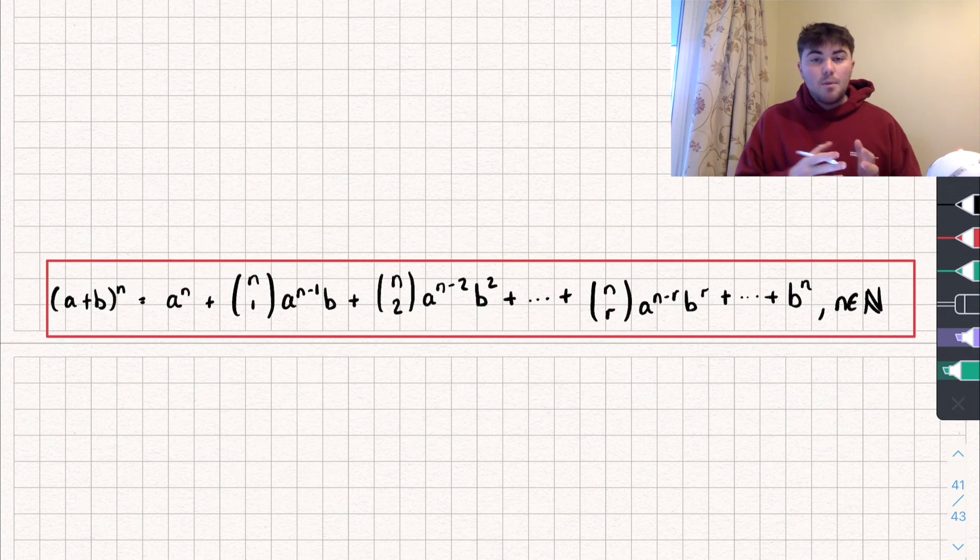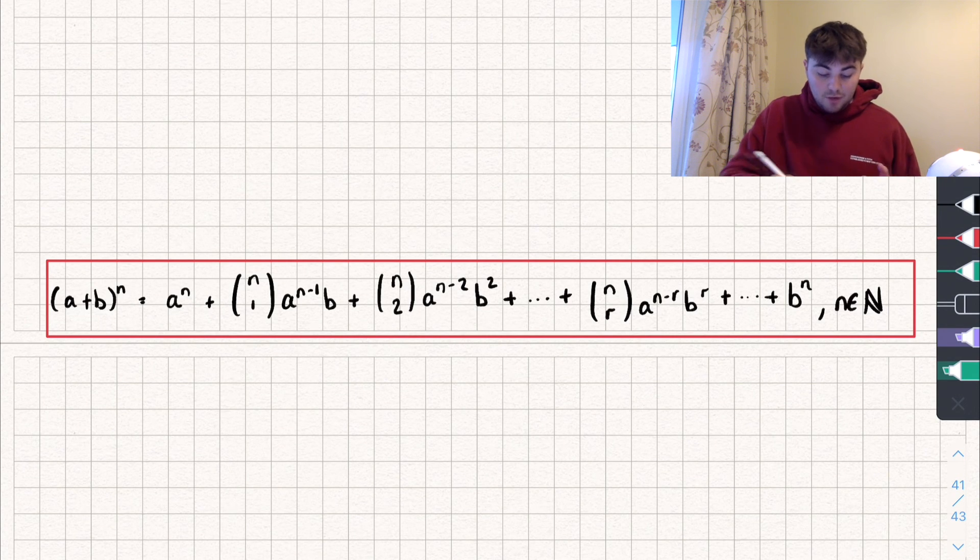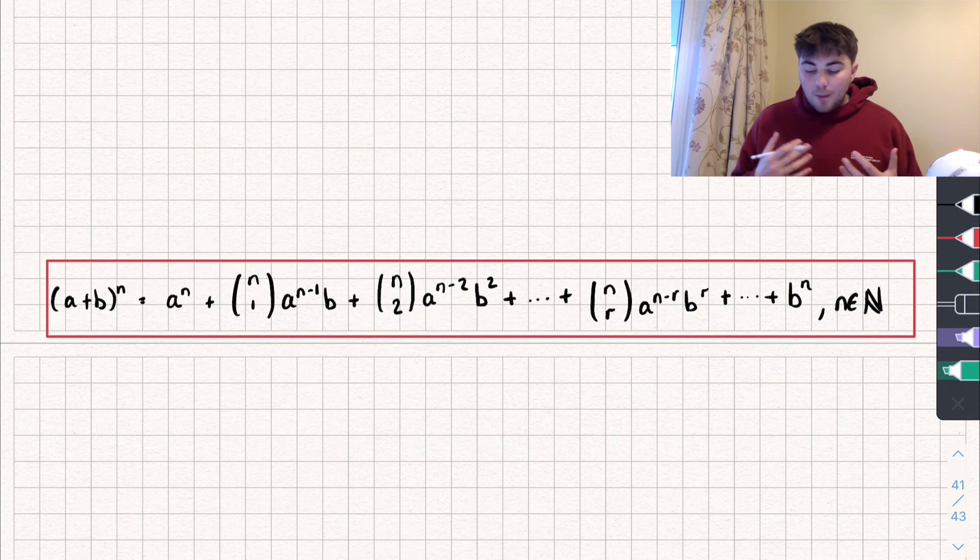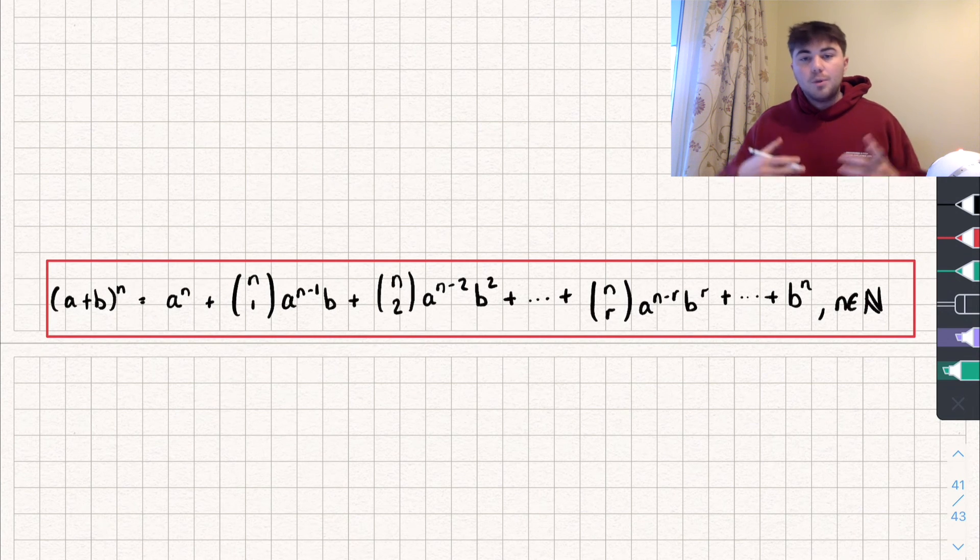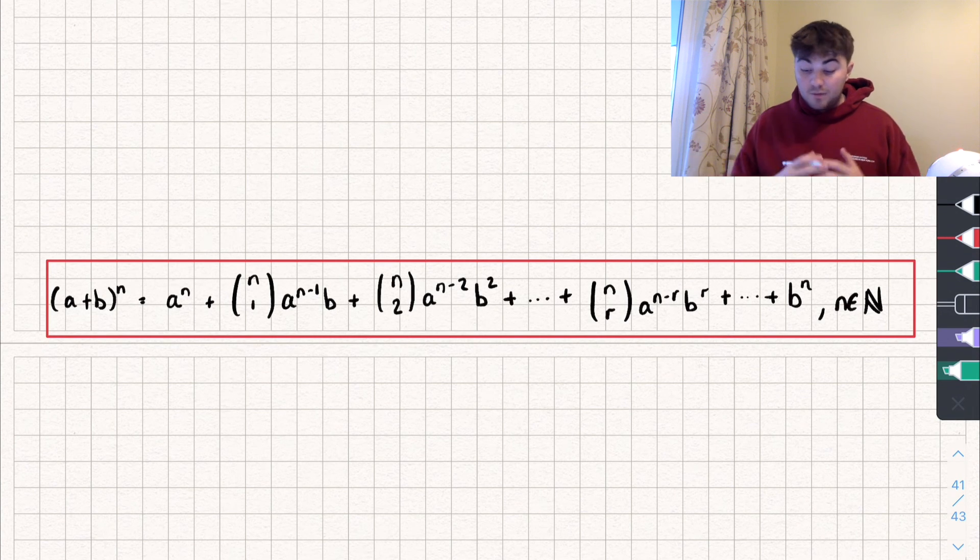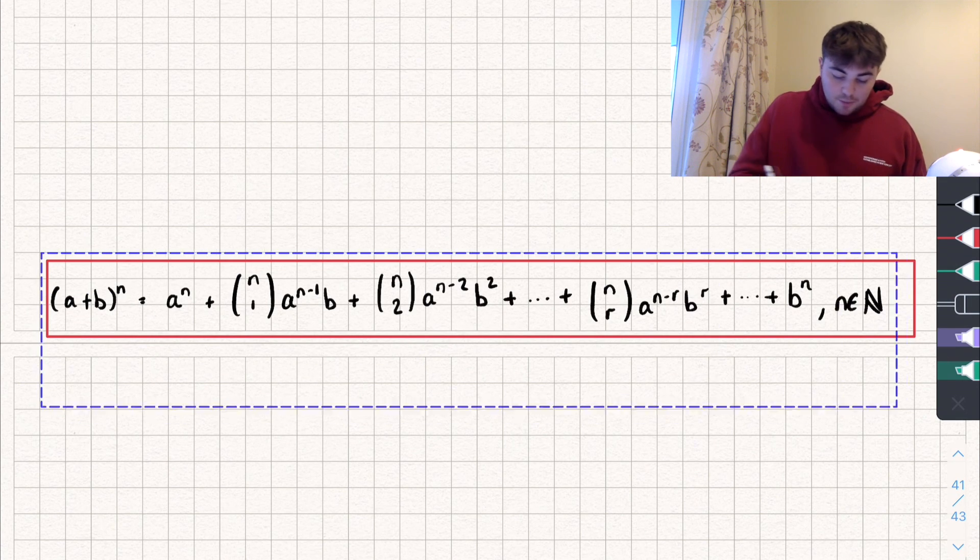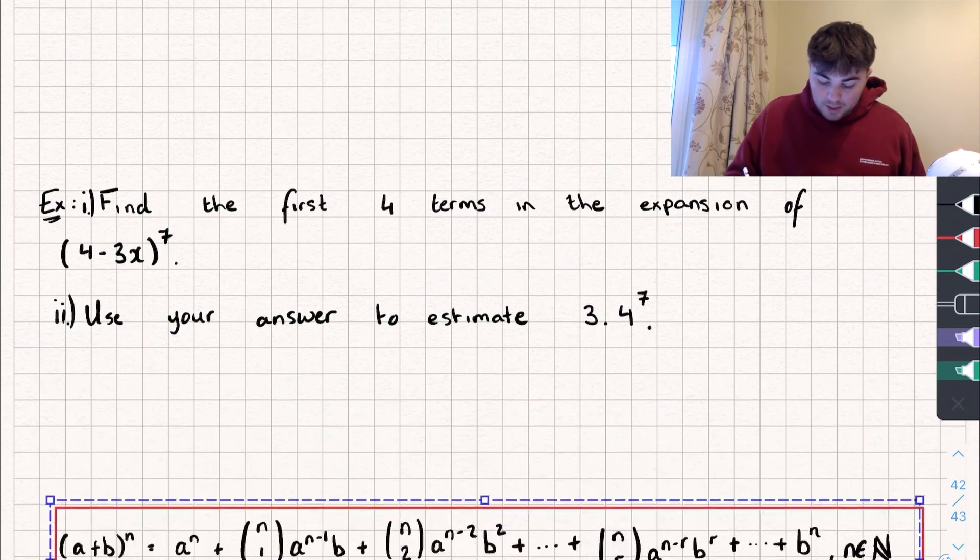And then each term is multiplied by n choose, well it starts off with n choose 0, then n choose 1, n choose 2, all the way up to the end. So hopefully now you've seen that it doesn't actually seem that bad. Now you can prove this formula using induction, but you don't need to do that for A level maths. You don't even need to do it for further maths, so don't stress about that. And so let's take a look at some examples because that will make it all a lot easier.